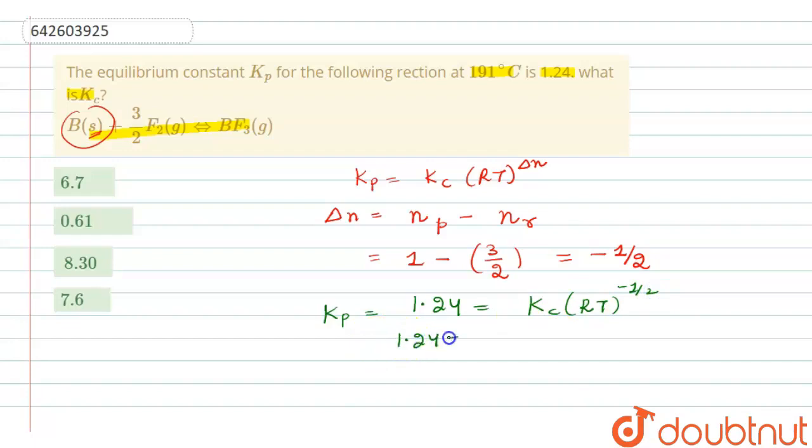Now the temperature is given as 191 degrees Celsius. We have to convert it into Kelvin, so we add 273 to it. It comes out to be 464 Kelvin, raised to the power minus half.